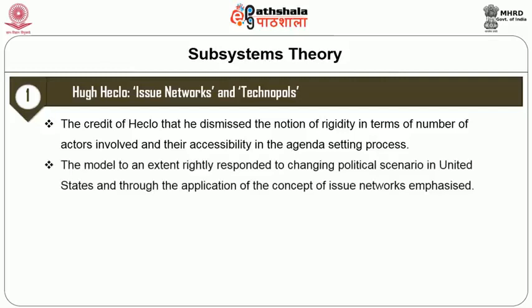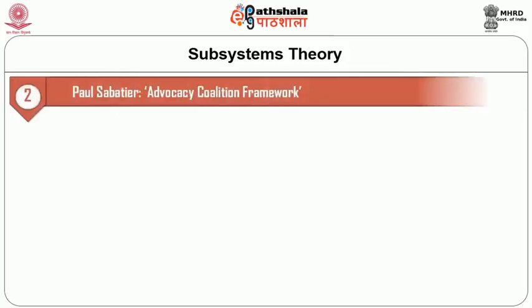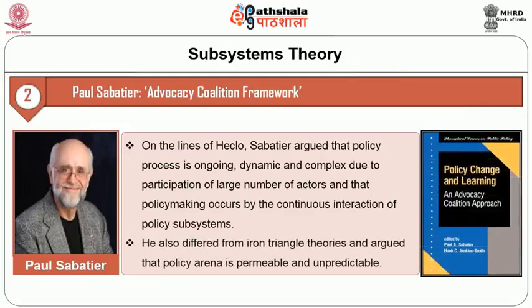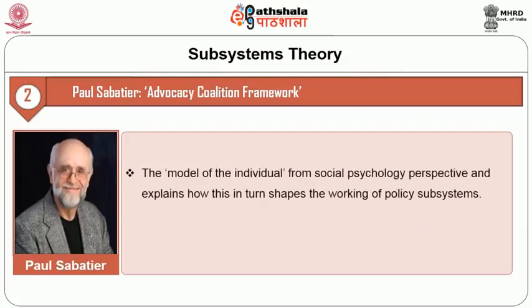The model, to an extent, rightly responded to the changing political scenario in the United States and, through the application of the concept of issue networks, emphasized the permeability and dynamic nature of the policy making arena. Now we are going to discuss Paul Sabatier's advocacy coalition framework. Another milestone in agenda setting policy literature is Paul Sabatier's work. On the lines of Heclo, Sabatier argued that policy process is ongoing, dynamic, and complex due to the participation of a large number of actors, and that policy making occurs by the continuous interaction of policy subsystems. He also differed from iron triangle theories and argued that the policy arena is permeable and unpredictable.